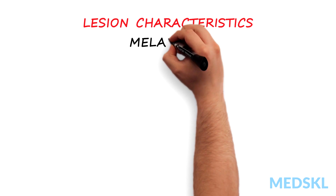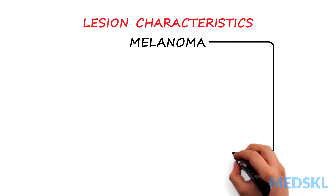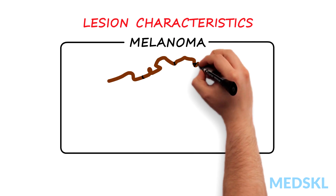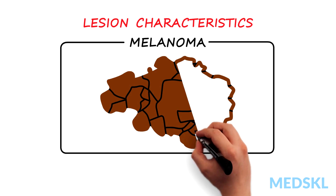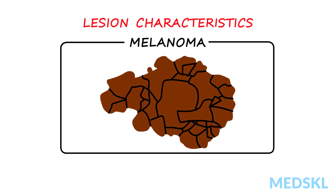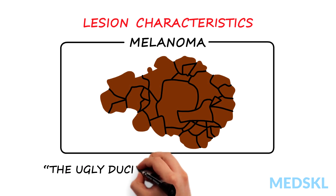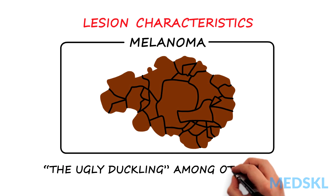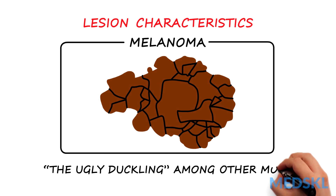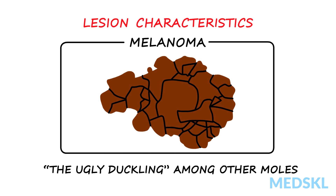Melanomas are typically, but not always, pigmented lesions similar to a mole or nevus, but with more unusual features. Typically the lesion will stand out as the ugly duckling — the lesion that looks unlike the patient's other moles.